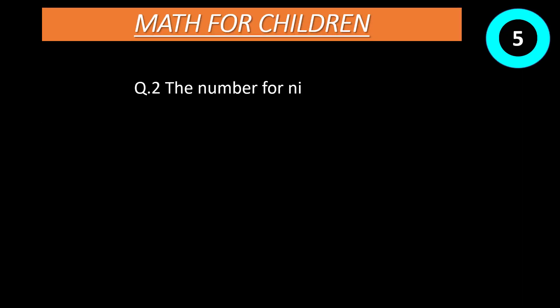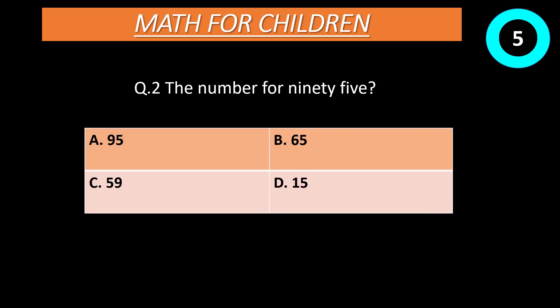Question number 2: The number for ninety five? Option A: 95. Option B: 65. Option C: 59. Option D: 15. Time start now. Correct answer is A, 95.